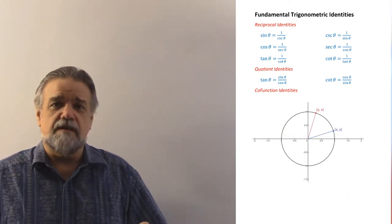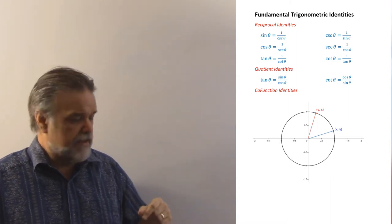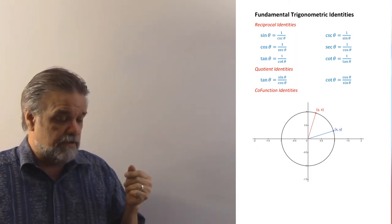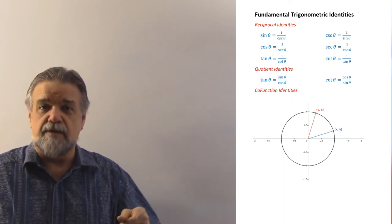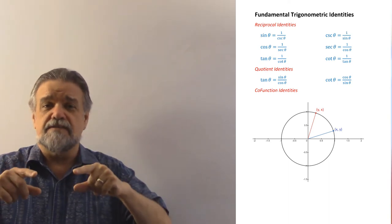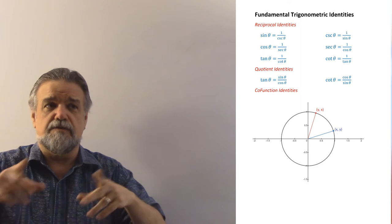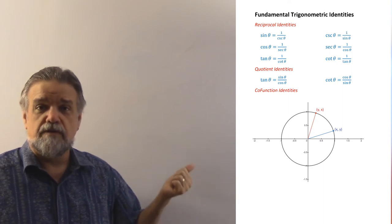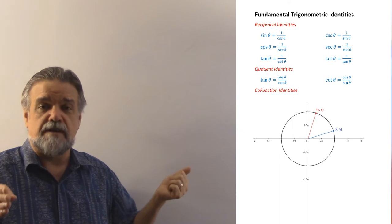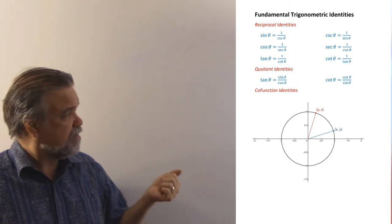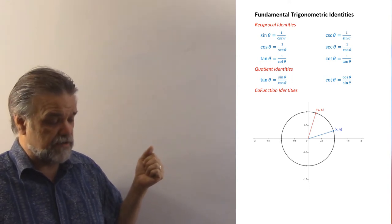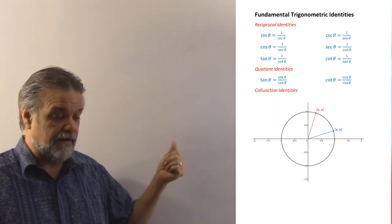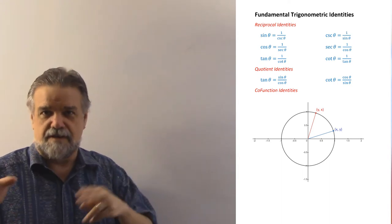We can also see this in the unit circle. Our blue angle is theta and the red angle is pi over 2 minus theta, so when we add them they equal 90 degrees — they're complementary. When you look at where they hit the unit circle, the cosine of the blue angle is x and the sine is y. The cosine of the red angle, pi over 2 minus theta, is y and the sine is x — because the sine of one equals the cosine of the other.